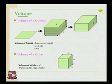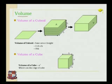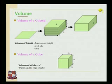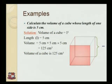Volume of a cuboid: if we observe the figure, the base of the cuboid is a rectangle. Volume of cuboid is given by base area into height, that is l into b into h, which equals lbh. Volume of a cube: since all faces of a cube have equal sides, the volume of a cube is a cubed, where a is the edge of the cube.